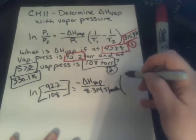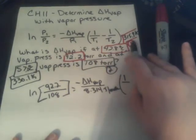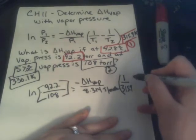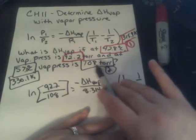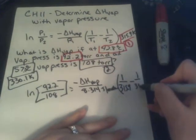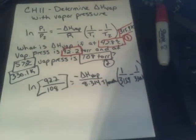So, 1 divided by, and what's my first scenario's temperature? It's 315, right? So, 1 divided by 315.9, minus 1 divided by, and what's my second scenario's temperature? 330.1. Running out of room here, right? Okay.